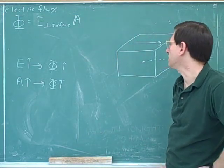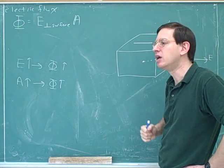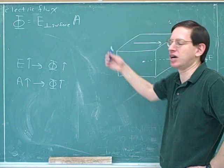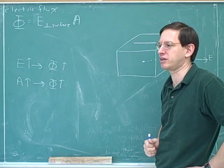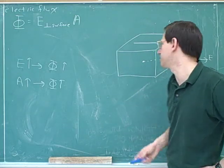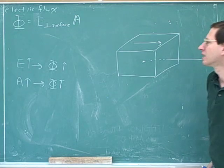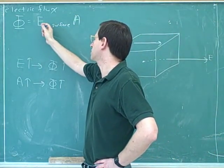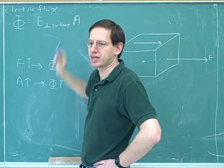If the electric field has one component parallel to the surface and one component perpendicular, you should only pay attention to the component that is perpendicular to the surface, because that's the only one that can actually exit or enter it — the other one is just skimming along parallel. So we need to update our concept: we only take the component of the electric field that's perpendicular to the surface, and then multiply that times the area.